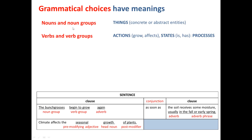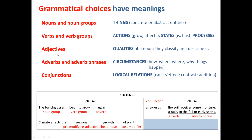We've seen that nouns and noun groups are things — they can be concrete things, like bunch grasses, or they can be abstract entities, like growth. Verbs and verb groups can be actions, like grow or effects, or they can describe a state, like is or has. Adjectives have the meaning of a quality of a noun — we've seen how they classify or describe a noun.